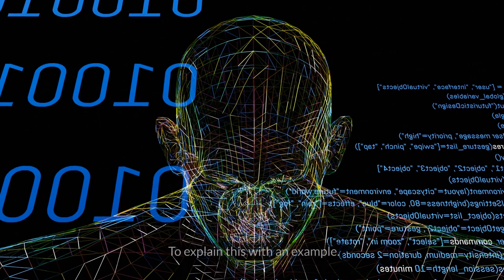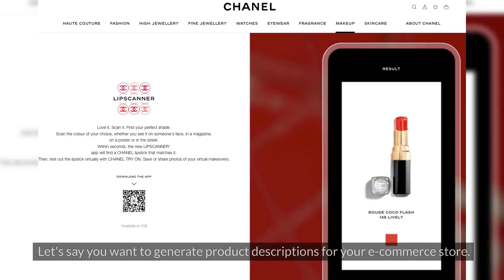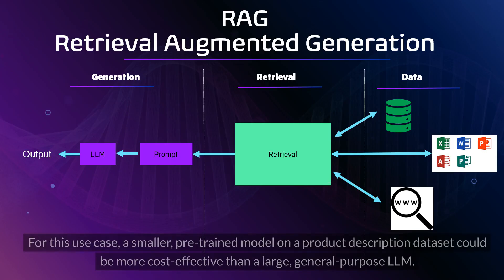To explain this with an example, let's say you want to generate product descriptions for your e-commerce store. For this use case, a smaller, pre-trained model on a product description dataset could be more cost-effective than a large, general-purpose LLM.